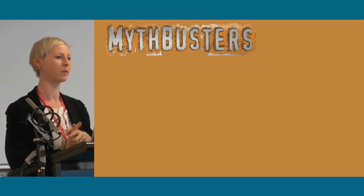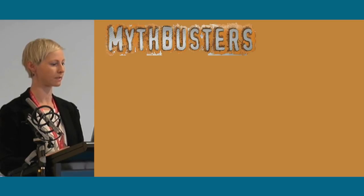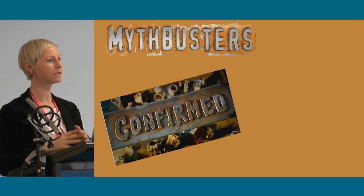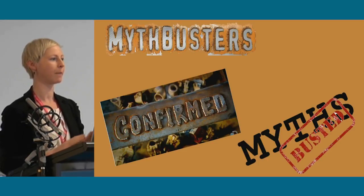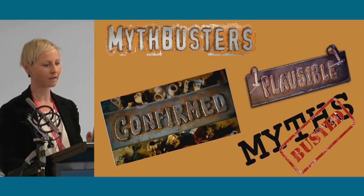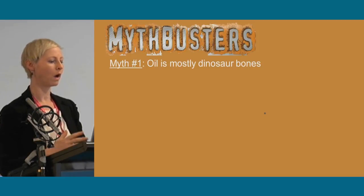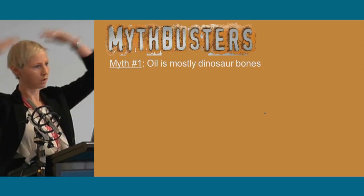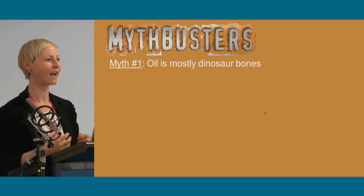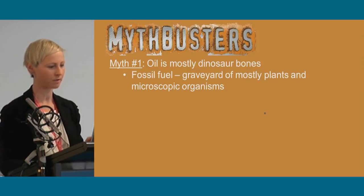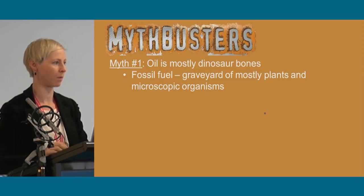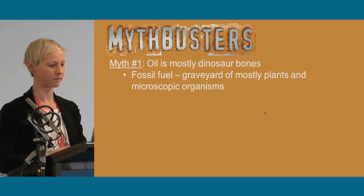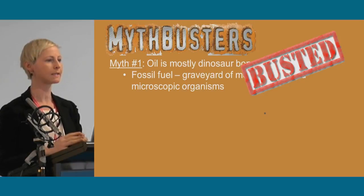Now for some audience participation — a MythBusters exercise. If you think it's true and confirmed, do a big C in the air. If it's not true and busted, wave your hands around. If you think it's plausible, put your hands on your head. Myth one: oil is mostly dinosaur bones. Oil and gas are fossil fuels — a graveyard of mostly plants and microscopic animals. You can get oil and gas from dinosaurs, but that's not what it's mostly. Busted.